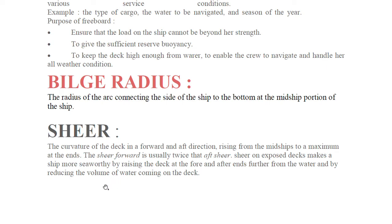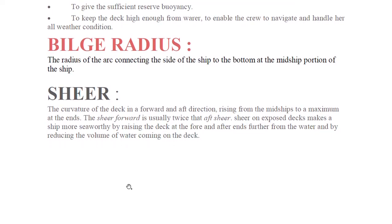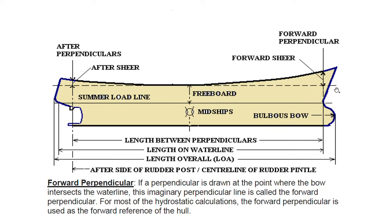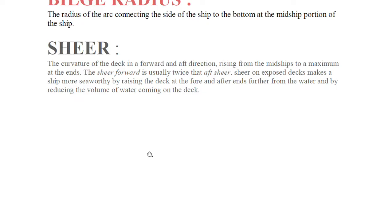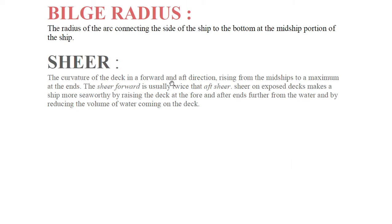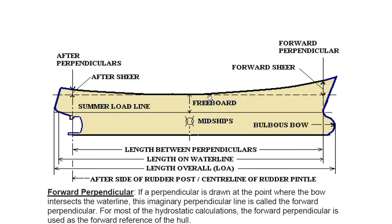Shear is the curvature of the deck in the forward and aft direction, rising from midship to a maximum at the ends. The shear forward is usually twice that of the aft shear. Shear on an exposed deck makes a ship more seaworthy by raising the deck at the fore and aft ends further from the water. From midship the curve starts and at the end it is maximum.